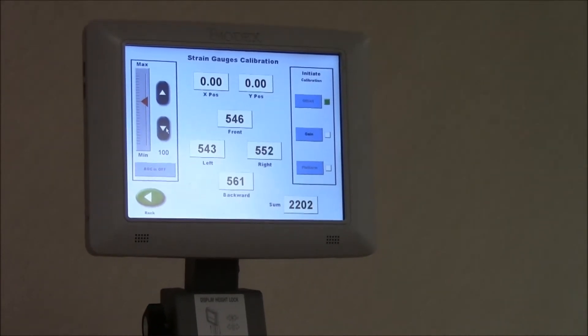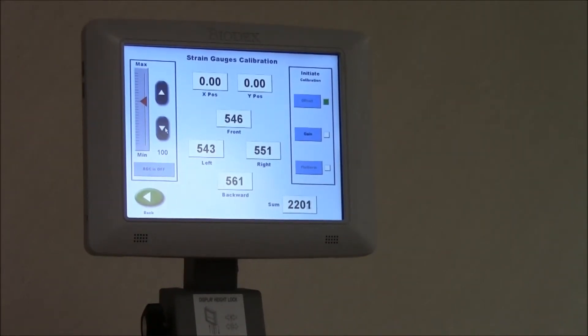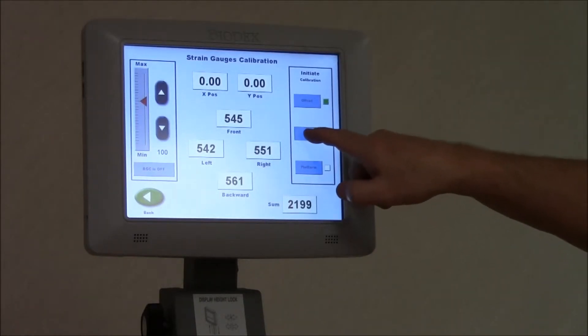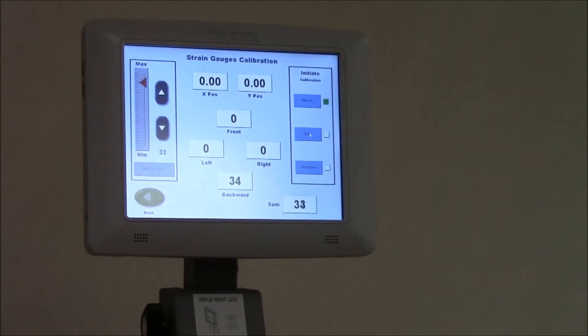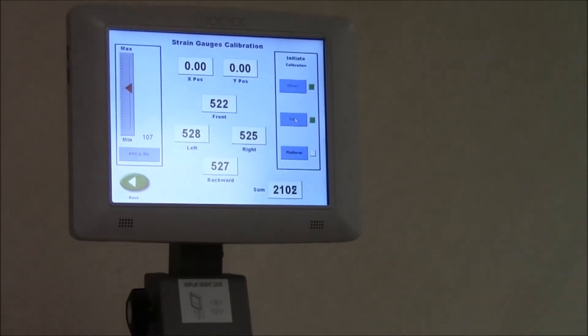Right around 2200 at that point. You're going to click on gain. It will zero out and we wait for the gain button to go green. At that point, the load calibration is complete. At that point, you're going to remove the screw from the center of the platform.